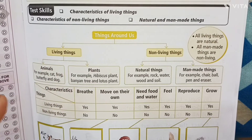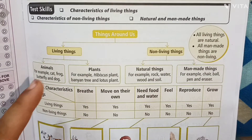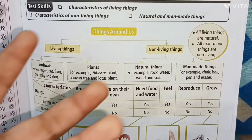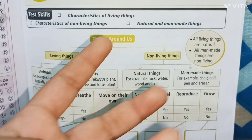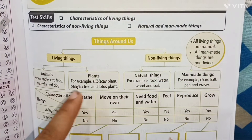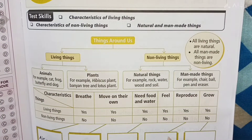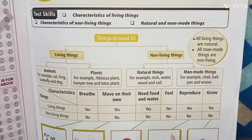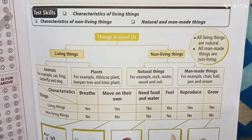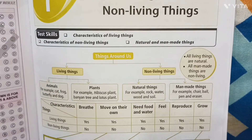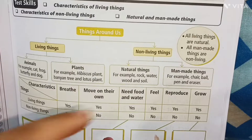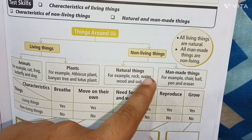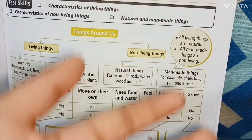Living things are animals, plants, humans, insects, trees, and birds. Non-living things are all man-made things.